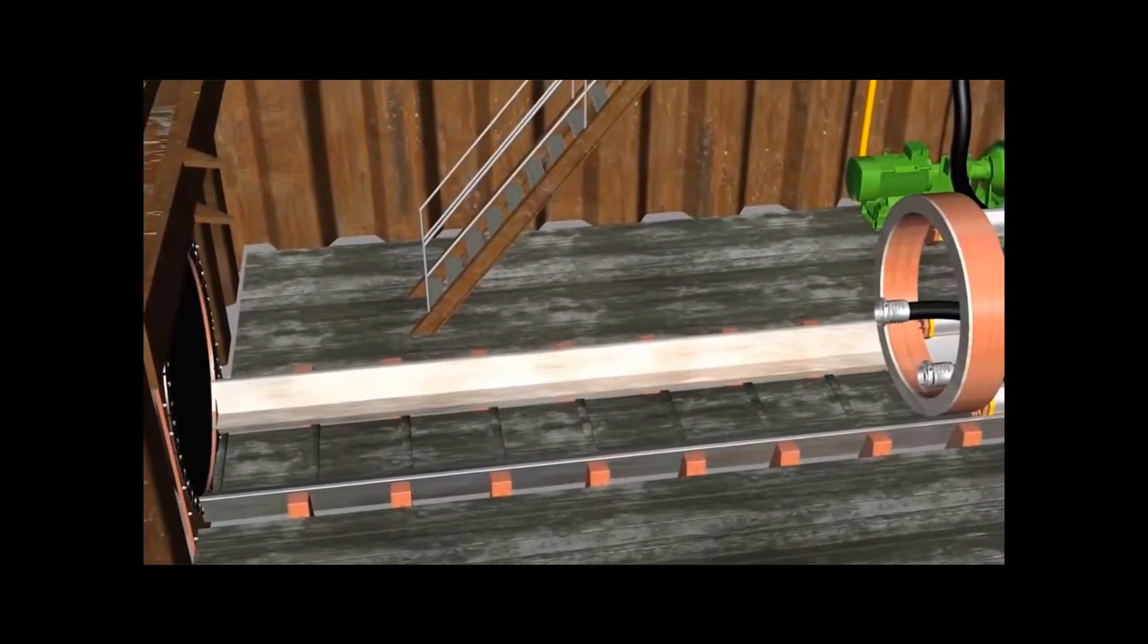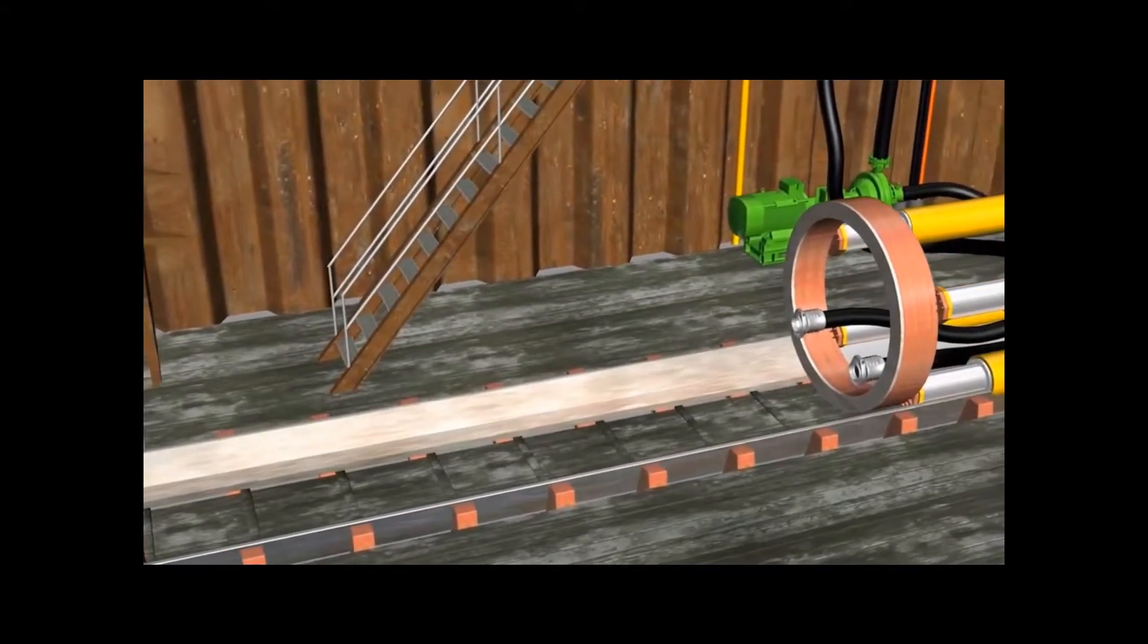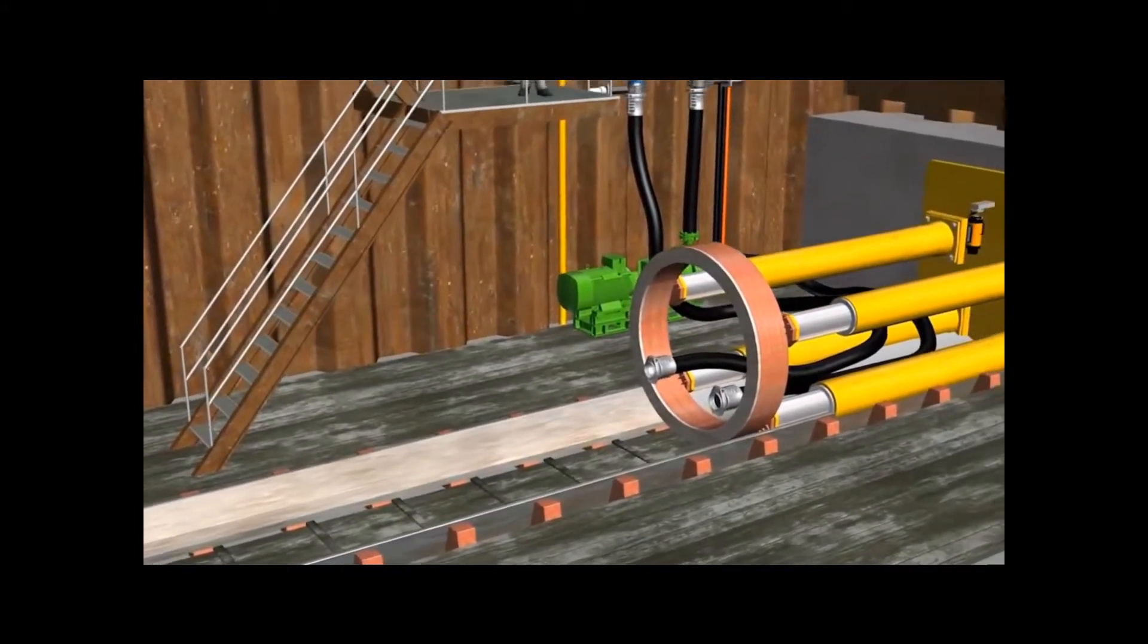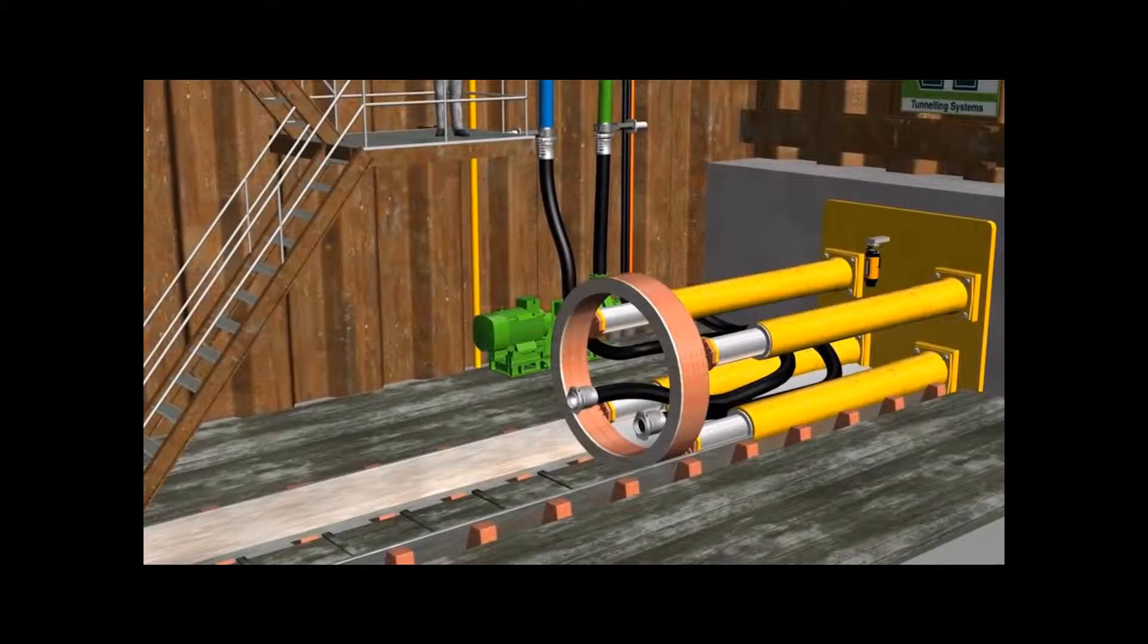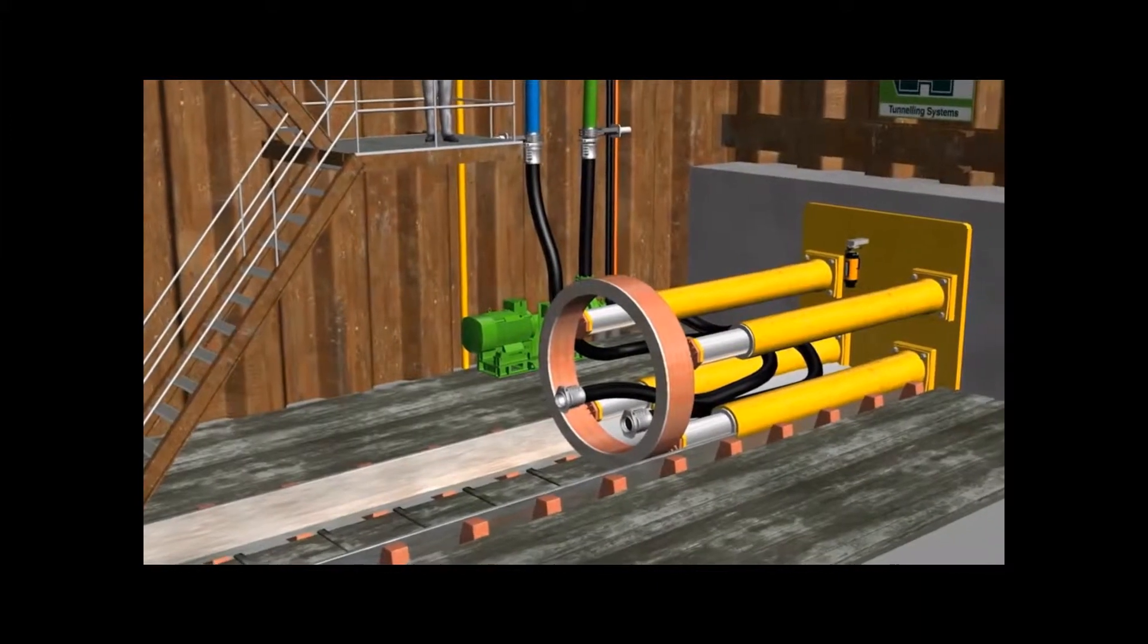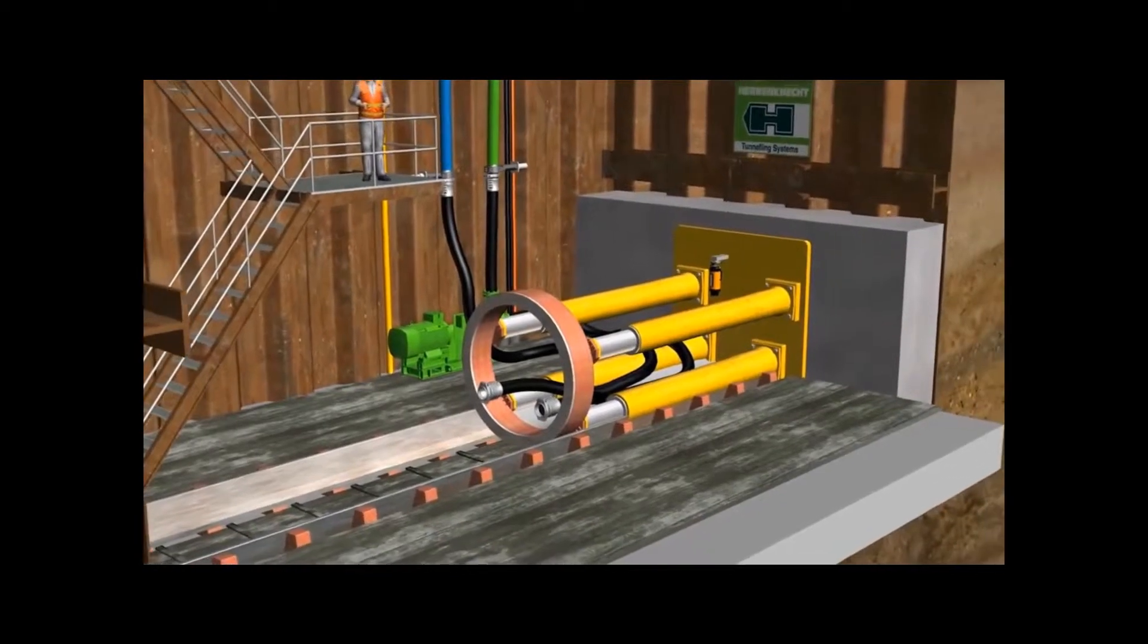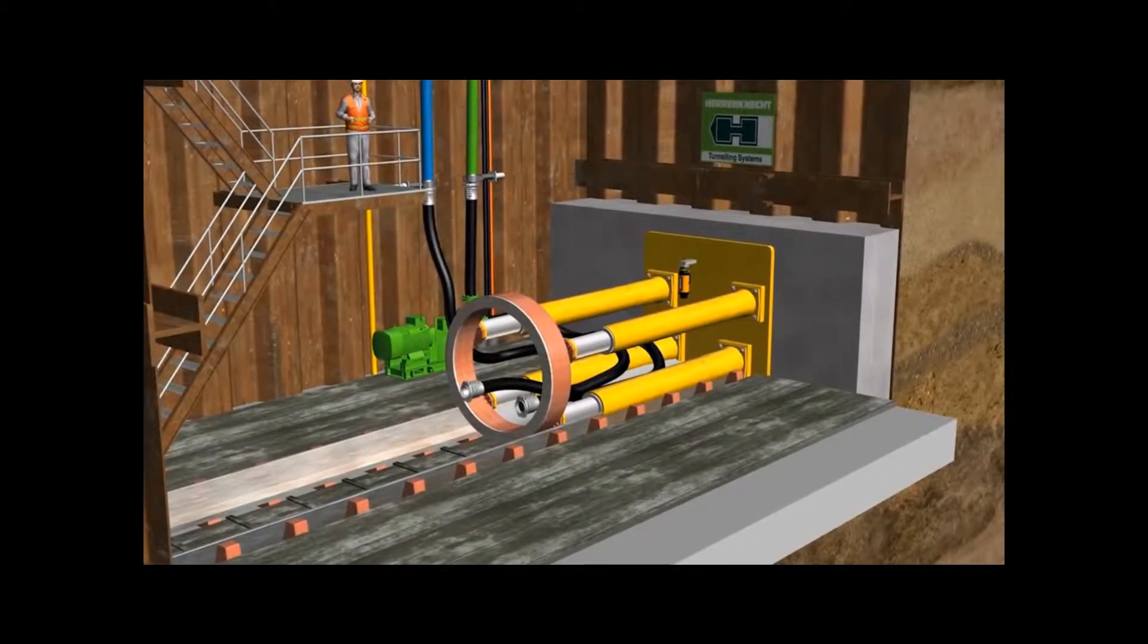The push rails for the main jacking station are assembled in the tunnel axis. These push rails serve to exactly position and guide the machine and jacking pipes. A concrete block is cast on the back of the shaft, which transfers the force of the main jacking station to the shaft wall.